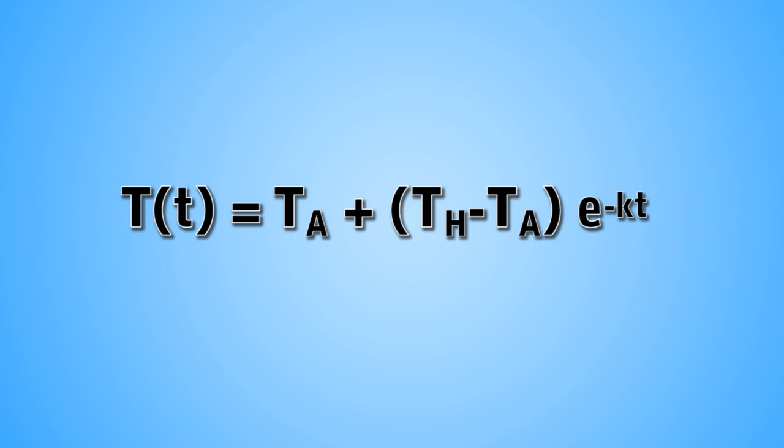The basic equation for Newton's law of cooling is T(t) = T_A + (T_H - T_A) e^(-kt).